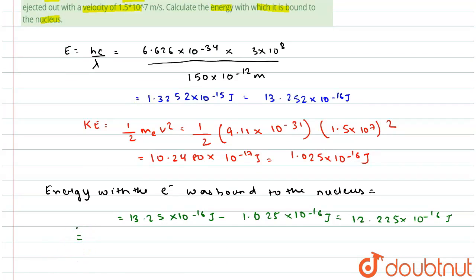To convert into electron volts, we have to divide by 1.602 into 10 power minus 19. So 12.225 into 10 power minus 16 divided by 1.602 into 10 power minus 19 electron volts.